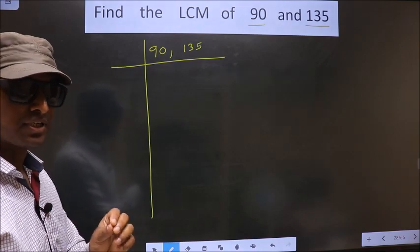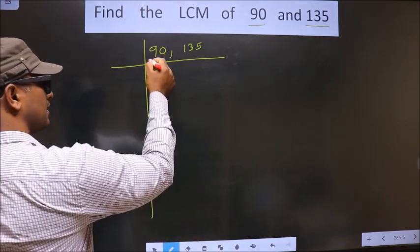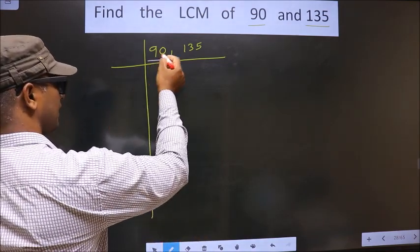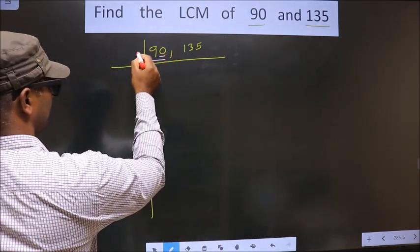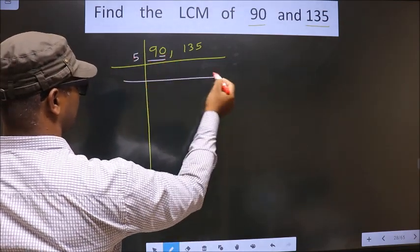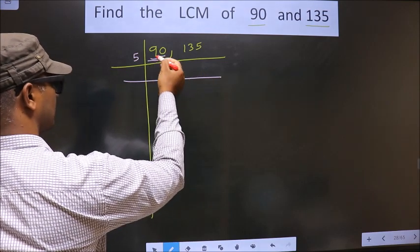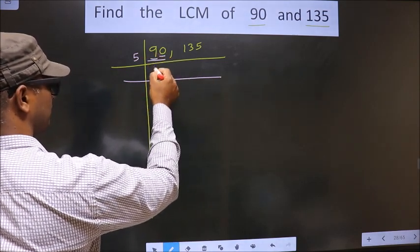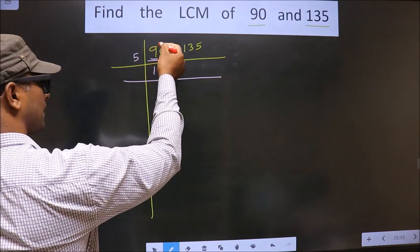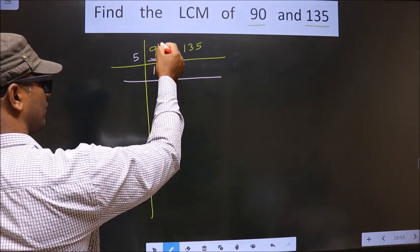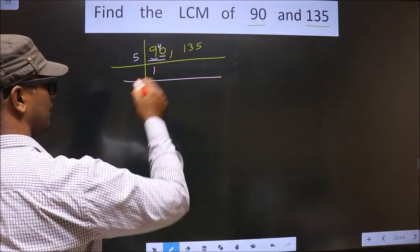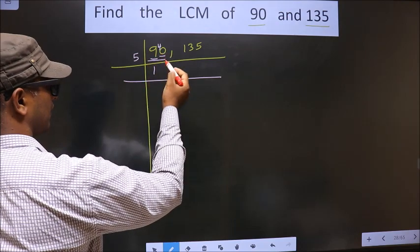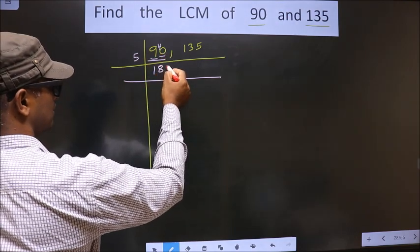First we focus on the first number, that is 90. Here for this number, last digit is 0, so we take 5 here. Now first number is 9. A number close to 9 in the 5 table is 5 once 5. 9 minus 5 is 4, 4 carried forward making it 40. When do we get 40 in the 5 table? 5 eights 40.